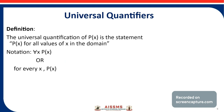Now we will see what universal quantifiers are. The universal quantification of p(x) is the statement 'p(x) for all values of x in the domain.' The notation is: for all x, p(x) is true. This is the universal quantifier.